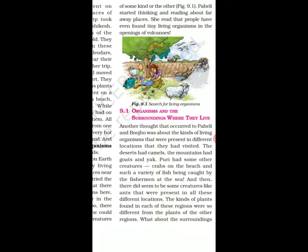There are different kinds of living organisms present in different locations. The desert has camels. The mountains have goats and yaks, and also some other creatures. Crabs are found on the beach and there is a great variety of fish in the sea. There are also some creatures like ants and spiders which are present in almost all locations. The kinds of plants also differ from each other in different regions.